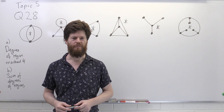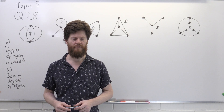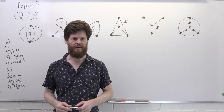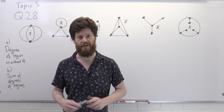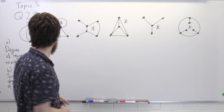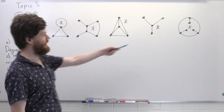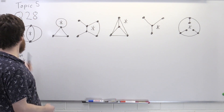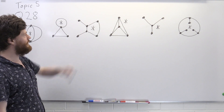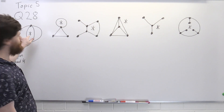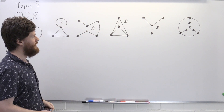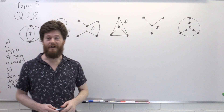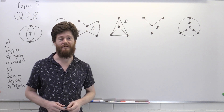Hello, this is Stephen Maher with the School of Maths here at UNSW. In this video we're going to be looking at question 28 from topic 5 in discrete maths. This is a graph theory question and it's about planar graphs. We've got six different planar graphs, each with a special region labeled with an asterisk, and the question is about planar graphs, their regions, and their duals.